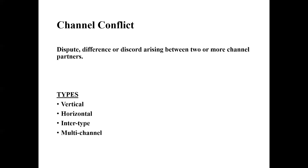Now let's talk about the types of conflict. First is vertical level conflict — we are talking about higher level to lower level. In this conflict, the channel partner belonging to a higher level enters into dispute with a channel member of a lower level, or vice versa. For example, wholesalers are at the upper level and retailers are at the lower level.